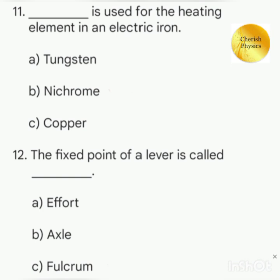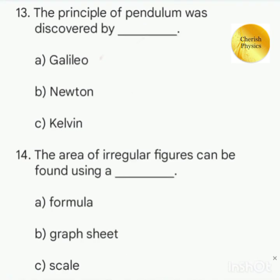Which of the following is used as a heating element in electric iron? The fixed point of a lever is called. The principle of pendulum was discovered by. The area of irregular figures can be found using a.